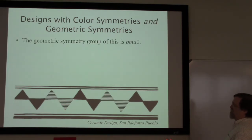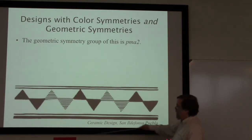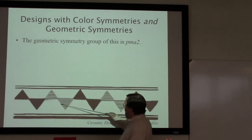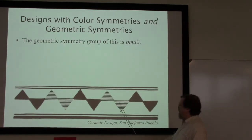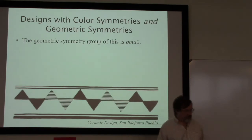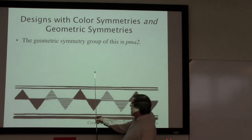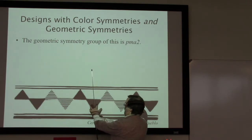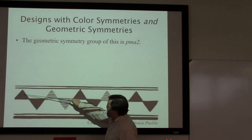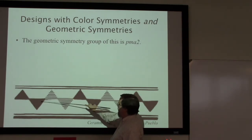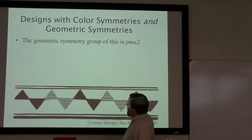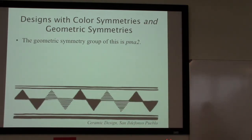If we were to just look at the geometry, this is pma2 — we have a triangle that glide reflects up and down and goes along to all of the other triangles, and we have various vertical reflections in the geometry. Those are geometric symmetries but they are not color symmetries. This vertical reflection keeps this black black, but this black comes over to the striped color. Similarly, the glide reflection takes this black to black but takes this black to the striped shape — so the glide reflection is also color mixing.